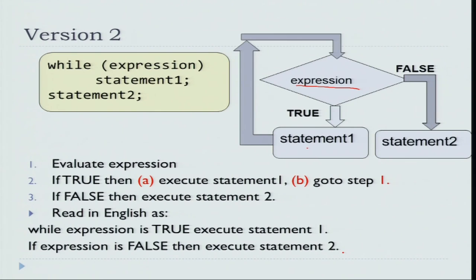The difference from an if condition is that if this were an if block, when the expression is true you would do statement 1 and exit — but that is not what happens in a while loop. After you execute the statement, you go back to the expression. So as long as the expression is true, you keep executing statement 1, and if the expression becomes false, then you execute statement 2.